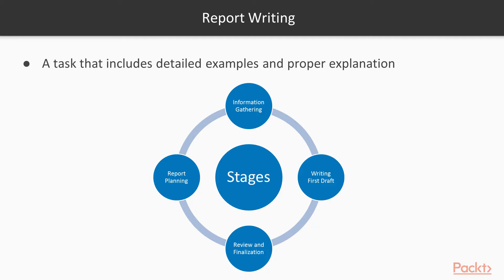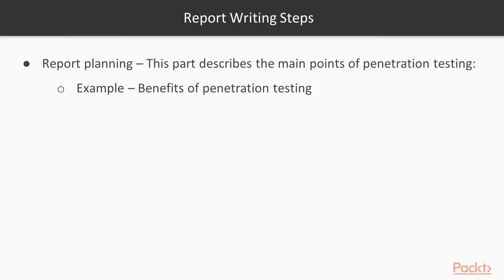Report writing is a task that includes detailed examples and proper explanation — it includes various kinds of examples and their explanations as well. There are four stages available: first is report planning, second is information gathering, third is writing the first draft, and fourth is review and finalization.